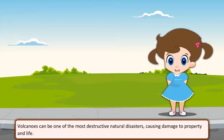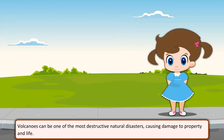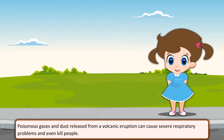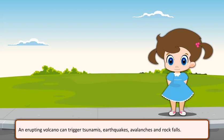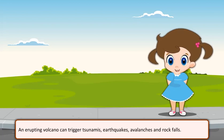Volcanoes can be one of the most destructive natural disasters, causing damage to property and life. Poisonous gases and dust released from a volcanic eruption can cause severe respiratory problems and even kill people. An erupting volcano can also trigger tsunamis, earthquakes, avalanches, and rock falls.